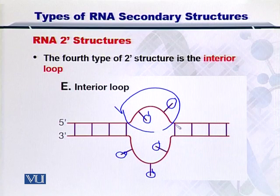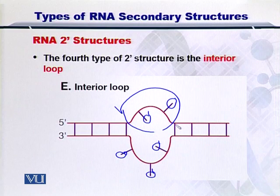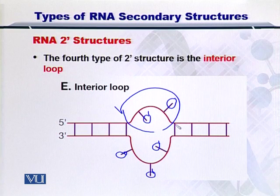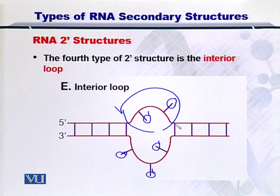So this is called an interior loop. On the 5' strand, it is possible that there are multiple nucleotides that remain unpaired, including 1, 2, 3, or more. And similarly, on the 3' end, we can have 1, 2, 3, or even more nucleotides that are unpaired. So this is just an example of the interior loop.